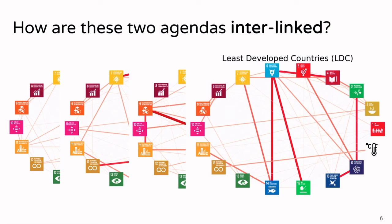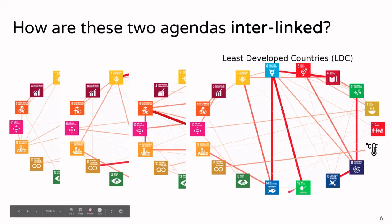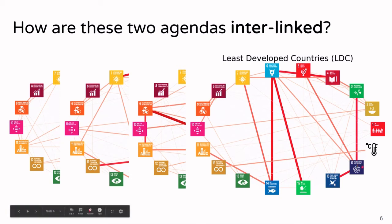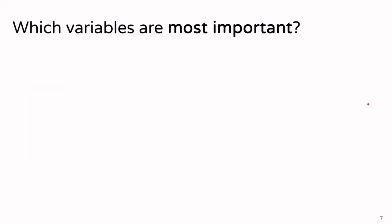In least developed countries, we see something similar to what we saw in the global south and eastern Africa: a very strong connection from SDG 6 (clean water and sanitation) to SDG 14 and 15, which are both environmentally motivated. What is also quite interesting is that SDG 17 (financial support and partnerships for the goals) is closely related to SDG 3 (good health and well-being).